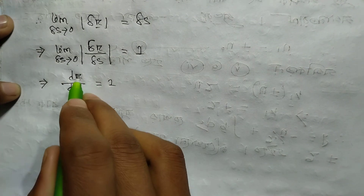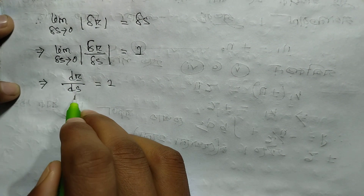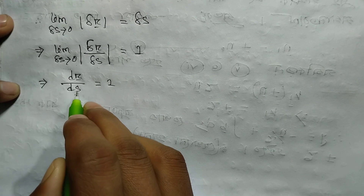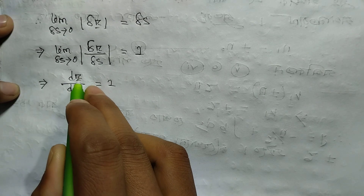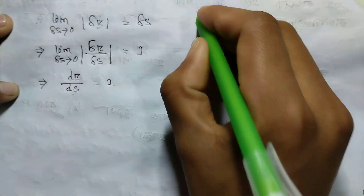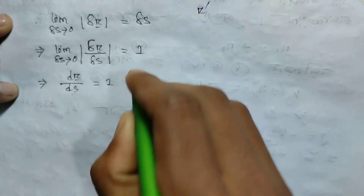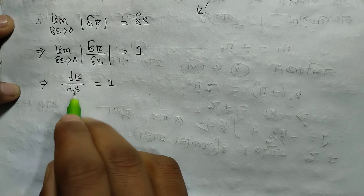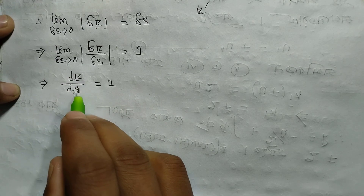So this is del r by del s. R differentiated — r prime. We can write del r by del s as r prime — that is the unit tangent vector t.